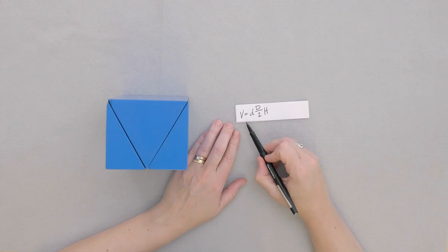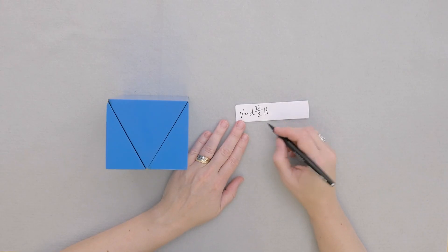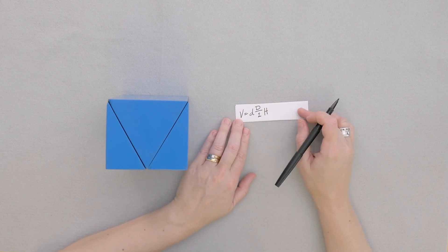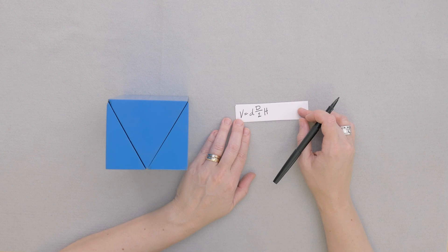So to find the volume of a rhombic prism, we're going to multiply the minor diagonal times the major diagonal divided by two times the height of the prism. Maybe you'd like to calculate the volume of this rhombic prism.